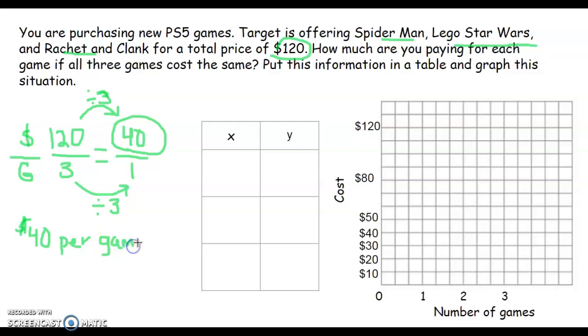But now we're going to go ahead and put this information in a table. The X is always my input. The Y is always my output. In this situation, my input is going to be the number of games. So I'm going to put a G above that. The output is the cost. And the reason why the output is the cost is because the cost will depend on how many games I buy. So if I buy only one game, I'm going to put that here in my table, I just found out that it costs $40.